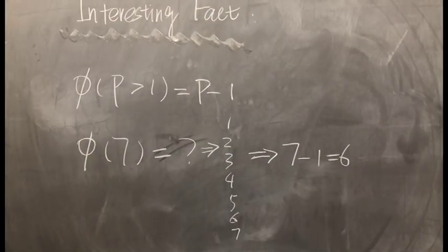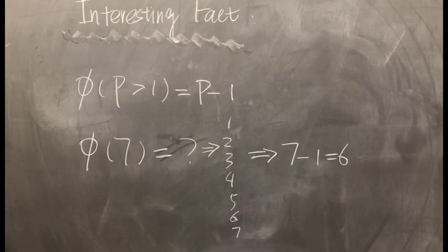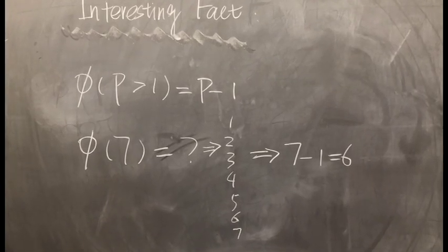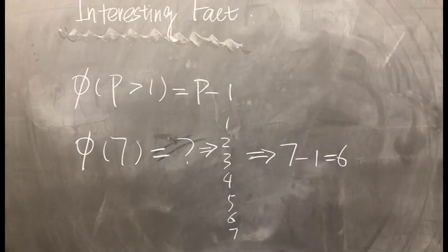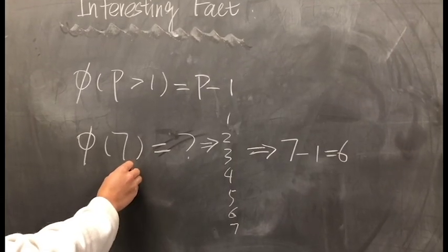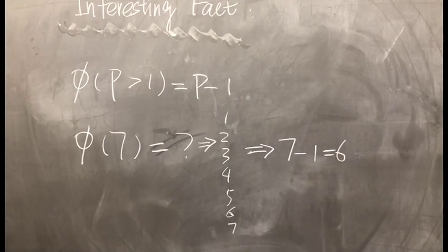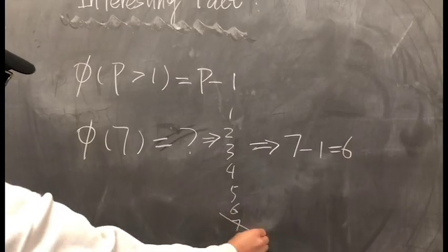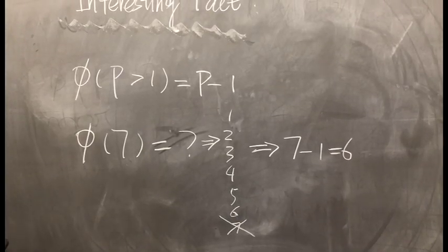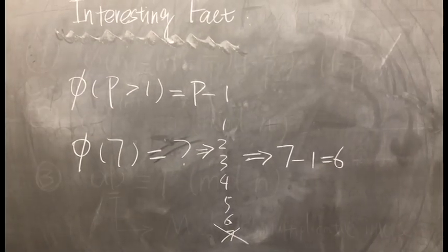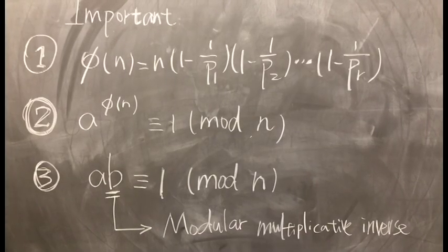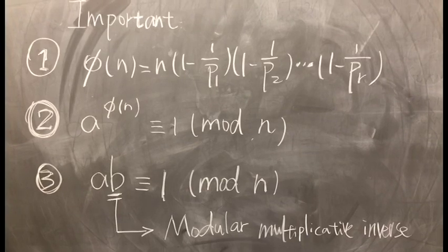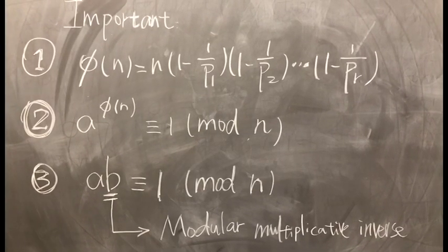Notice there is an interesting fact of the phi function. The phi function of any prime number p greater than 1 is p minus 1. Here is the reason why. The prime number p greater than 1 will only share the factor with itself. For example, if we calculate phi of 7, since 7 is a prime number, we will find none of the numbers share a factor with 7 except 7 itself. So we cross the 7 out, and the answer will be 7 minus 1, which is 6.